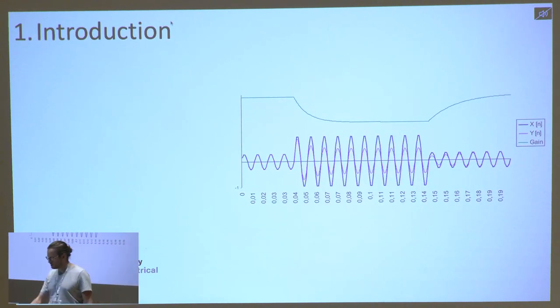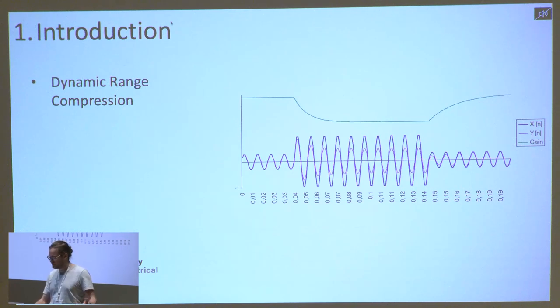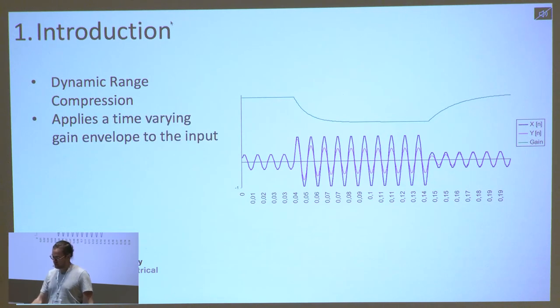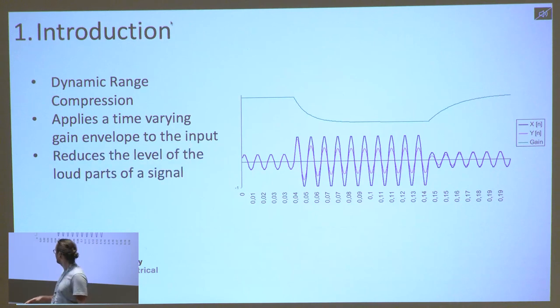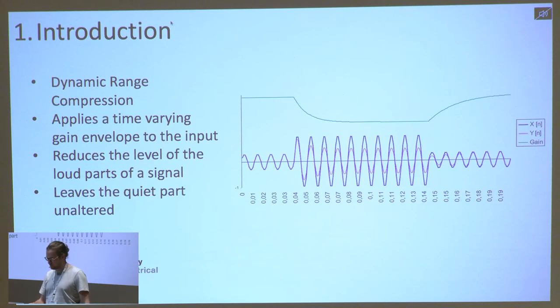So, we've kind of seen this already, but dynamic range compression basically involves applying some kind of time-varying gain envelope to a signal. You might use it to reduce the loud parts of a signal and leave the quiet parts relatively unaltered. That's typically why you need it.